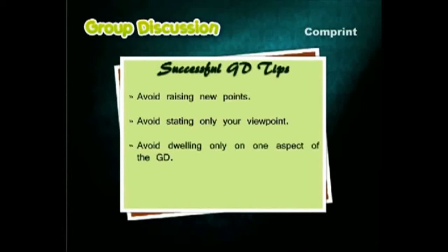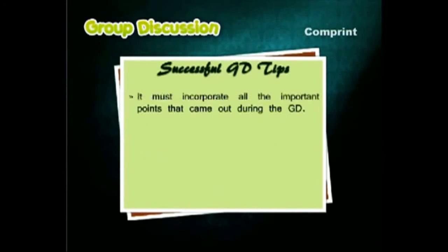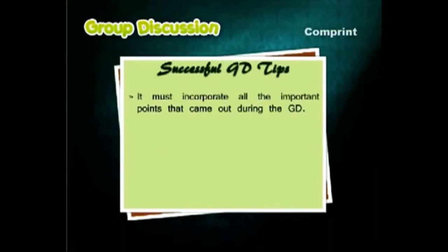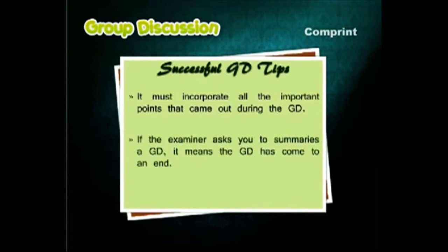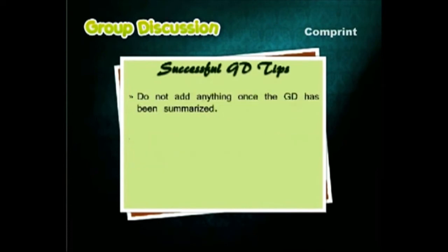Keep the summary brief and concise. It must incorporate all the important points that came out during the group discussion. If the examiner asks you to summarize, it means the group discussion has come to an end. Do not add anything once the group discussion has been summarized.